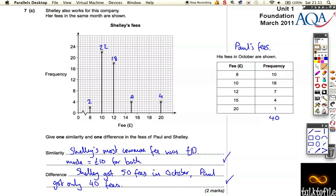Now, there's all sorts of other different things. You could have said anything that was different about the two of them. So you could have said that Shelly got more fees at 20 pounds, or she got less fees at 8 pounds, or anything. I just chose those two. As long as what you said is correct, then you'll get the marks for that.